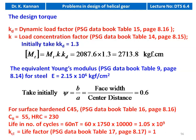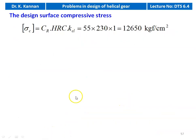Properties of C45 material: CR = 55, HRC = 230. Life in number of cycles: 60 × N × T = 60 × 1750 × 10,000 = 1.05 × 10^9 cycles. For life greater than 10^7 cycles, life factor KCL = 1 from table 17. Design surface compressive stress sigma_c = CR × HRC × KCL = 55 × 230 × 1 = 12,650 kgf/cm².